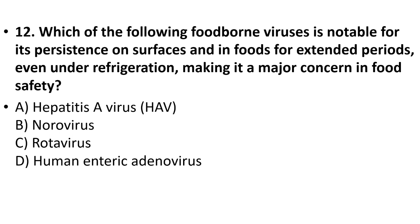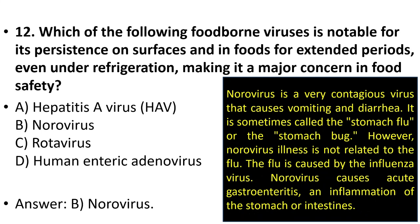Twelfth question: Which foodborne virus is notable for its persistence on surfaces and in foods for extended periods even under refrigeration, making it a major concern in food safety? Options: hepatitis A virus, norovirus, rotavirus, human enteric adenovirus. The answer is option B, norovirus. Norovirus is a very contagious virus causing vomiting and diarrhea, sometimes called the stomach flu, and causes acute gastroenteritis — inflammation of the stomach or intestines. Reference from CDC.